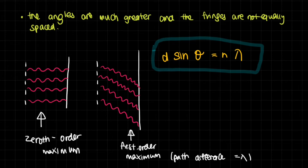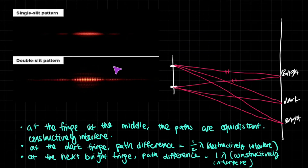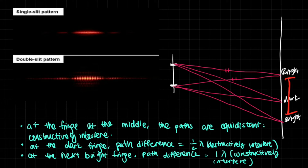The interesting thing about using a diffraction grating is that the angles at which these maxima occur are very much greater. You might have remembered the interference fringes from the Young double slit experiment — in reality, the distances between those interference fringes are very, very small. But for diffraction gratings, this distance becomes much bigger. In addition, the interference fringes for the Young double slit experiment are equally spaced, whereas for diffraction gratings the angles increase with the order of the maxima — third order maxima is a higher order than second order maxima.